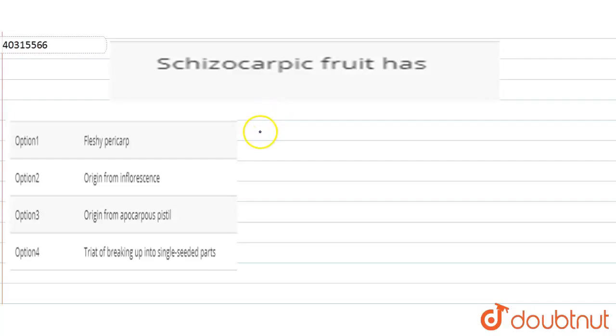Hello everyone, today's question is: Schizocarpic fruit has... What is a Schizocarpic fruit? Our options are: Fleshy Pericarp, origin from Inflorescence, origin from Epicarpous Carpus Pistil, or trait of breaking up into single seeded parts. Now, what is the Schizocarpic fruit?